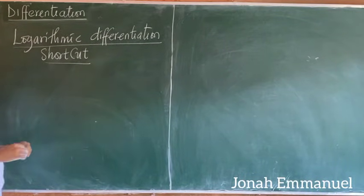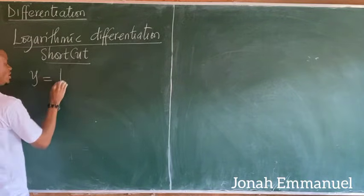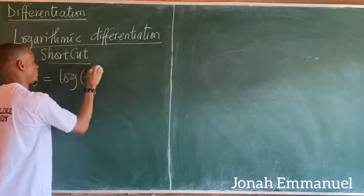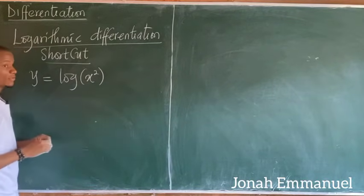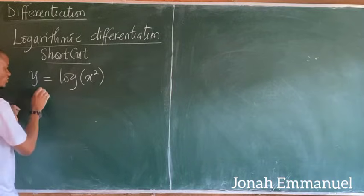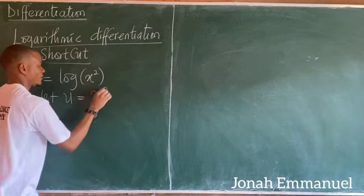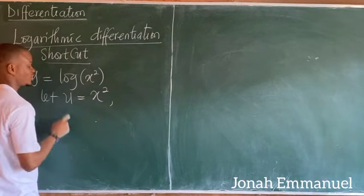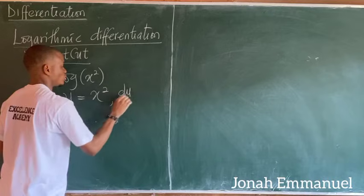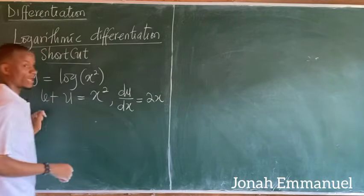Before then, if I have y equal to log x squared, I'll differentiate this using Case 1. Let u be equal to x squared, and differentiating u with respect to x gives du over dx equal to 2x.